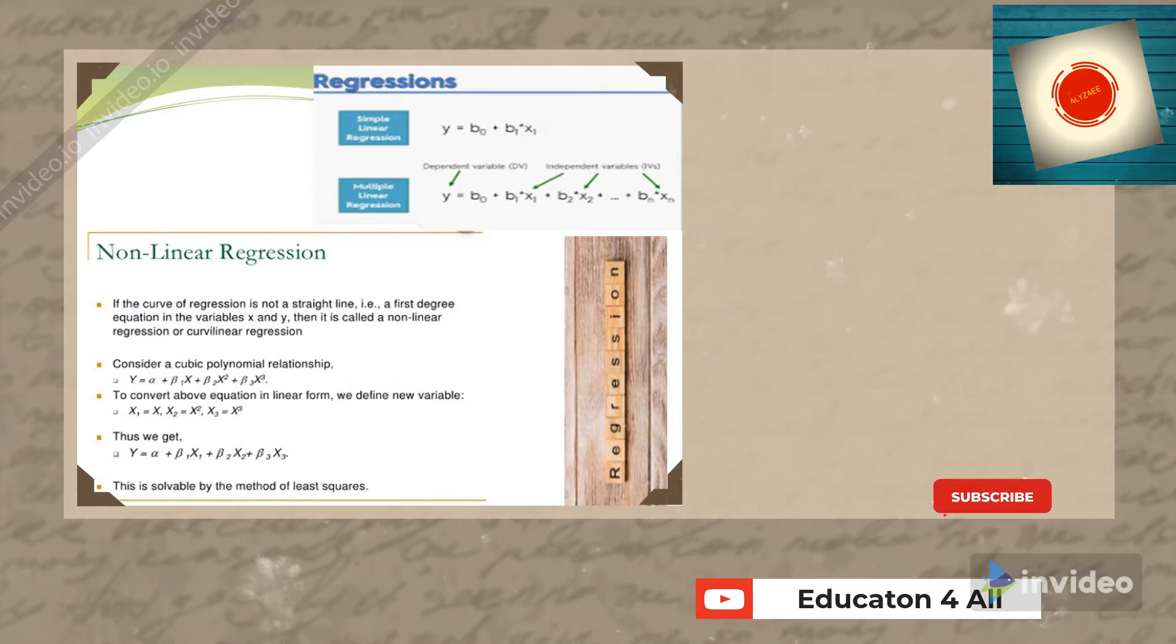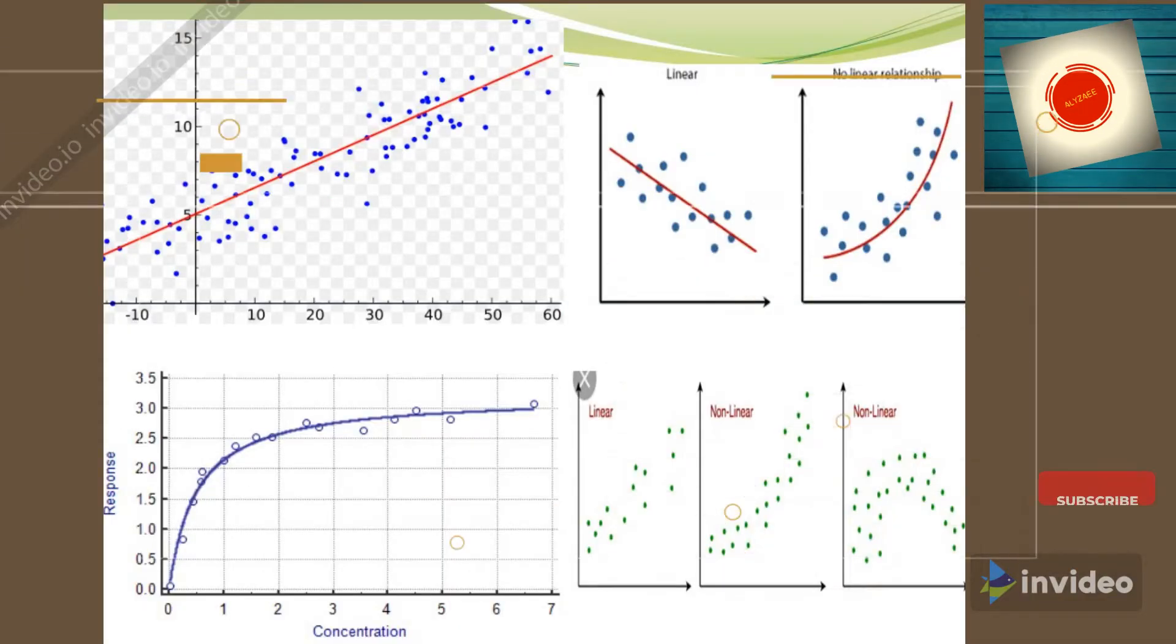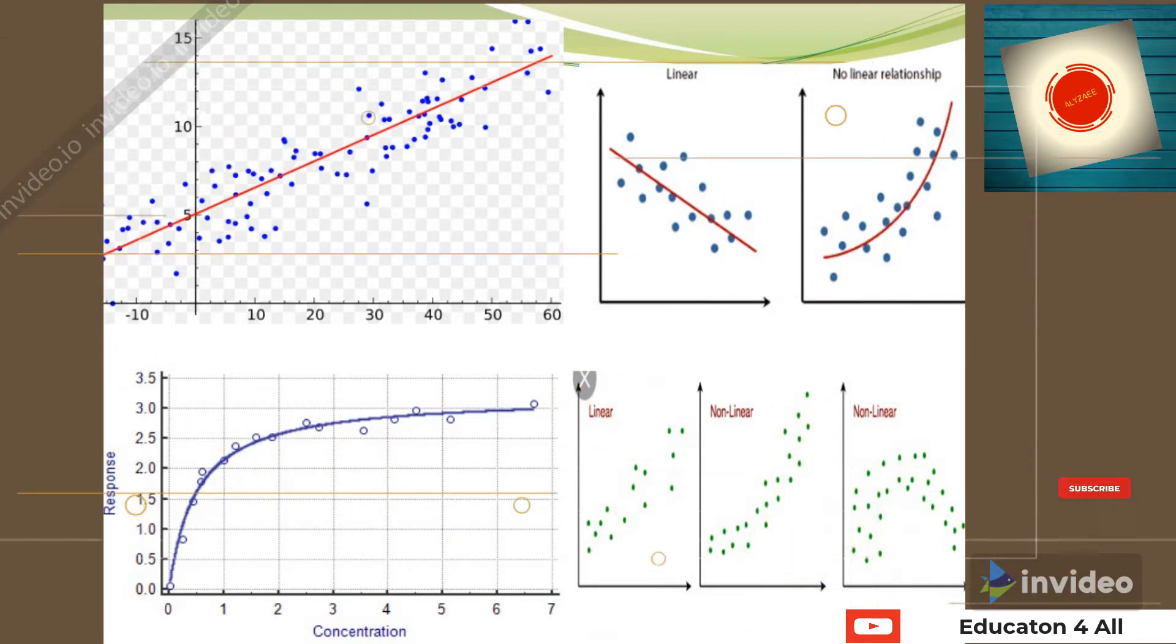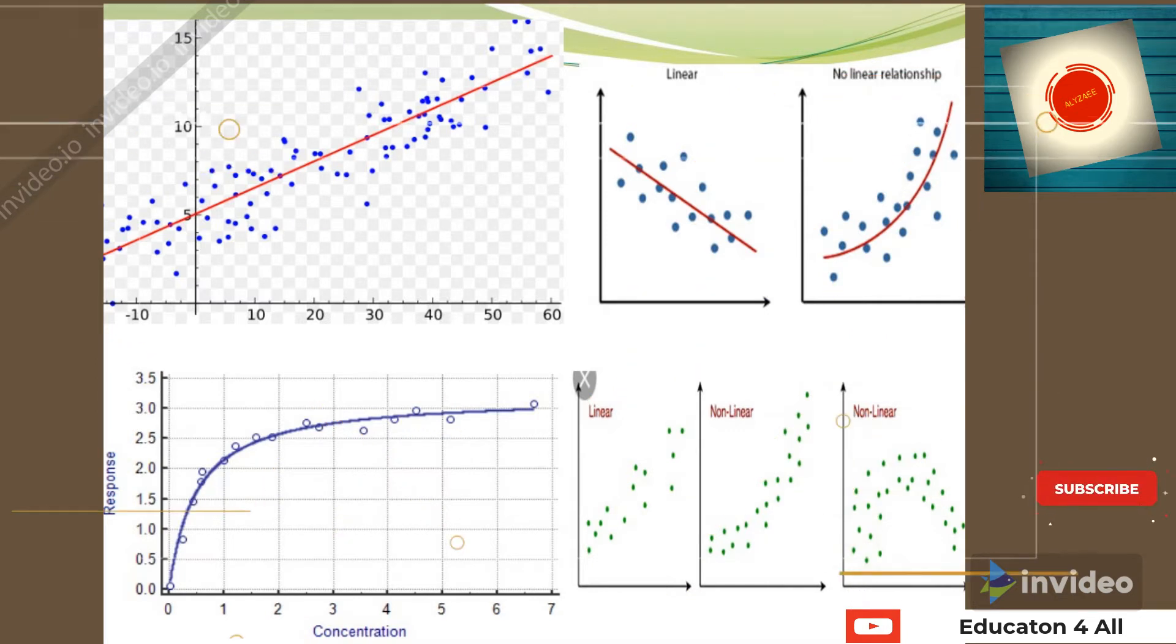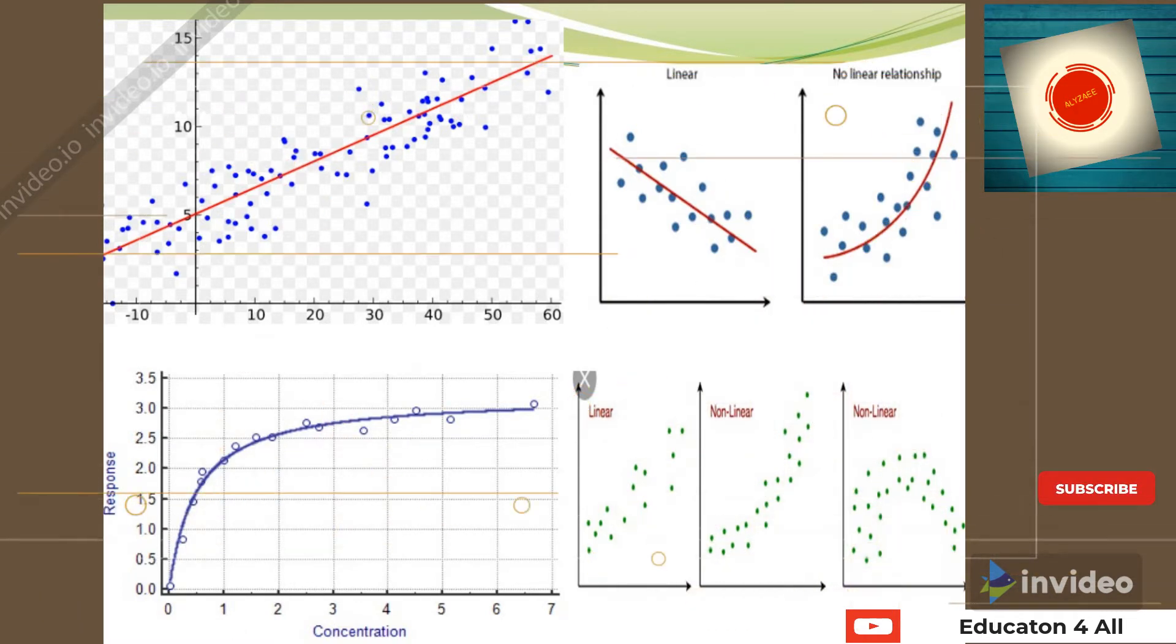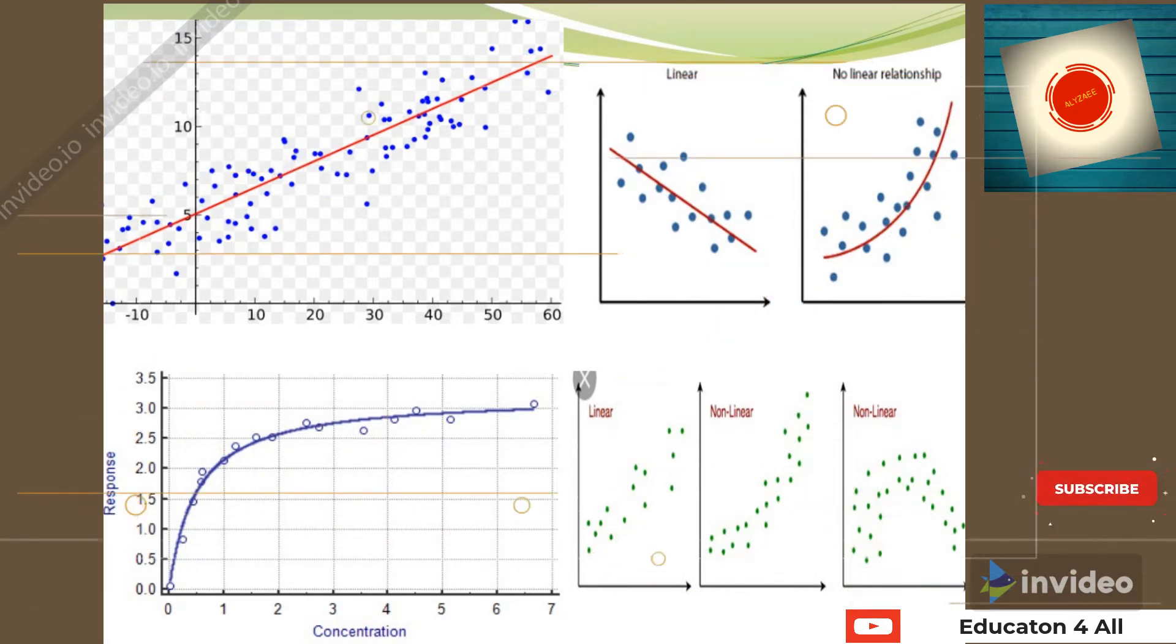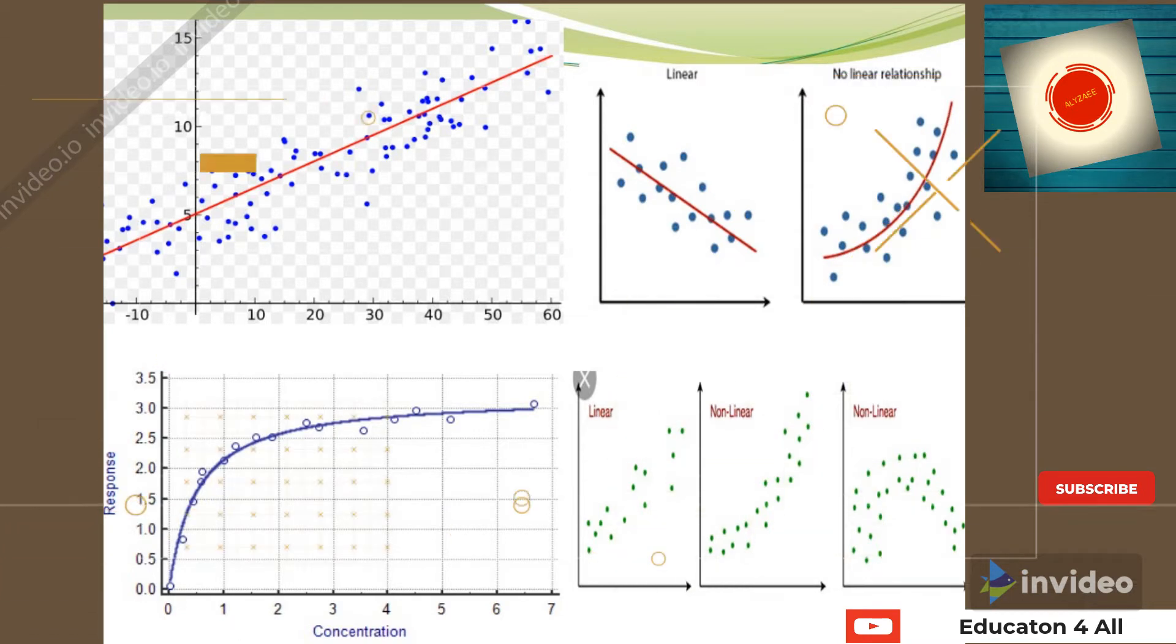Here we can see the graphical representation of linear and non-linear regression. On the left top, you can see the red straight line with blue dots plotted above and below the regression line. For non-linear relationships, it's not a straight line but a curved line going upwards with the data plotted around it.